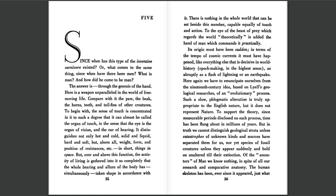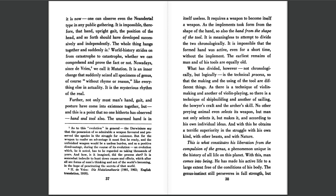Of the ancestors of man we know nothing. In spite of all our research and comparative anatomy, the human skeleton has been, ever since it appeared, just what it is now. One can observe even the Neanderthal type in any public gathering. It is impossible, therefore, that hand, upright gait, the position of the head, and so forth should have developed successively and independently. The whole thing hangs together and suddenly is. World history strides on from catastrophe to catastrophe, whether we can comprehend and prove the fact or not.